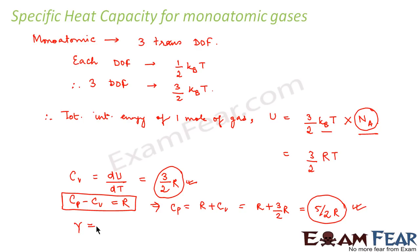So what will be the ratio of the specific heat capacities? That is gamma is equal to Cp by Cv. So this gamma is also a parameter. So gamma is equal to 5 by 2 R divided by 3 by 2 R. So this comes out to be 5 by 3. So the ratio of the specific heat capacities remains the same, that is 5 by 3, for all monoatomic gases.